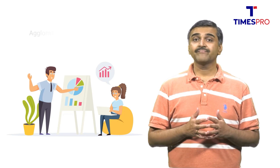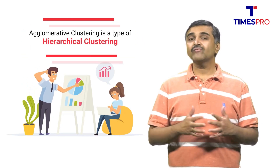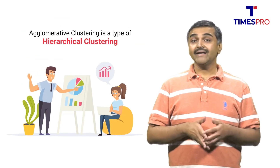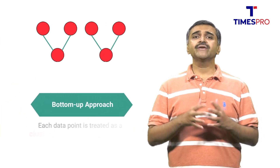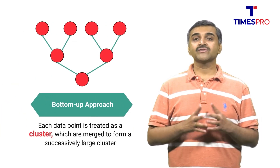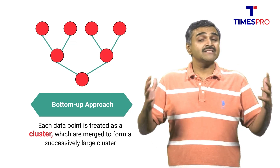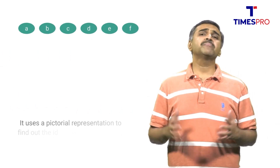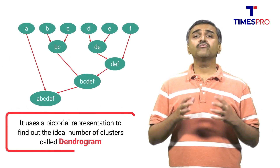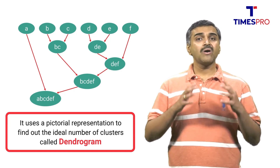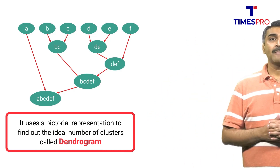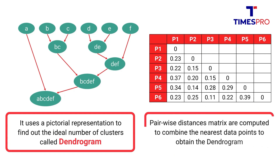Let's understand what agglomerative clustering is. Agglomerative clustering is a type of hierarchical clustering. It's a bottom-up approach wherein each data point is treated as a separate cluster, which are then merged to form a successively larger cluster. It uses a pictorial representation called the dendrogram to find the ideal number of clusters. A pair-wise distance matrix is computed to combine the nearest data points to obtain the dendrogram.